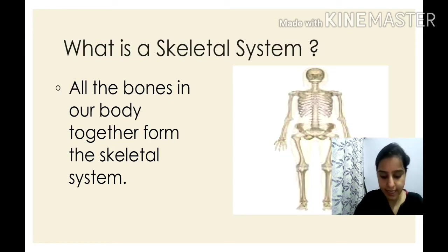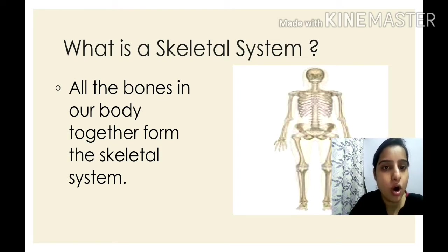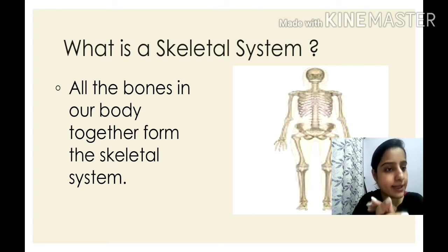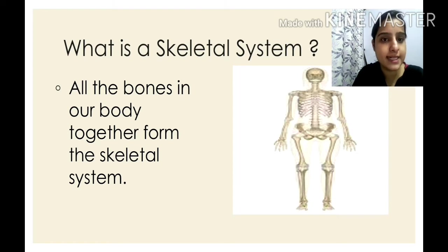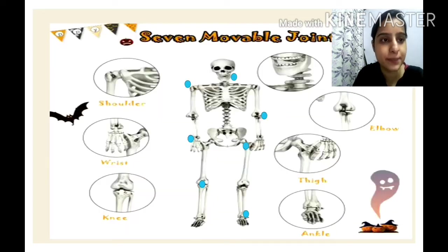Open your book, children. Take out page number 15. What is a skeletal system? All the bones in our body together form the skeletal system. You can see what it looks like in the picture on screen. So this is about the skeletal system. If anyone asks you, you should be able to answer that all the bones in our body together form the skeletal system.